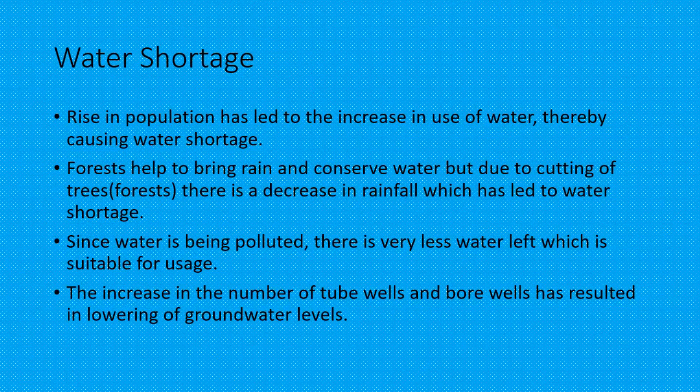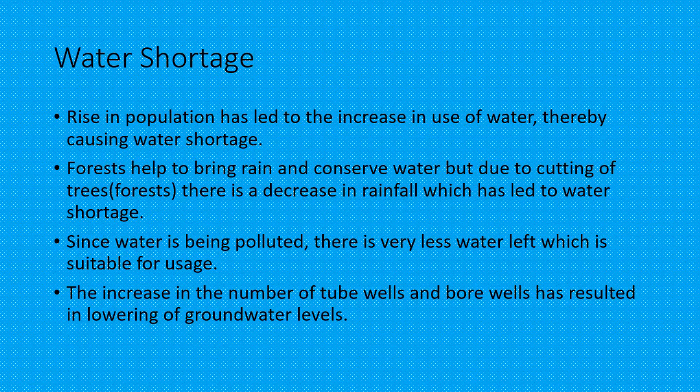Water Shortage: A rise in population has led to an increase in the use of water, thereby causing water shortage. Forests help to bring rain and conserve water, but due to cutting of trees and forests, there is a decrease in rainfall, which has led to water shortage. Since water is being polluted, there is very little water left which is suitable for use. The increase in the number of tube wells and bore wells has resulted in lowering of groundwater levels.